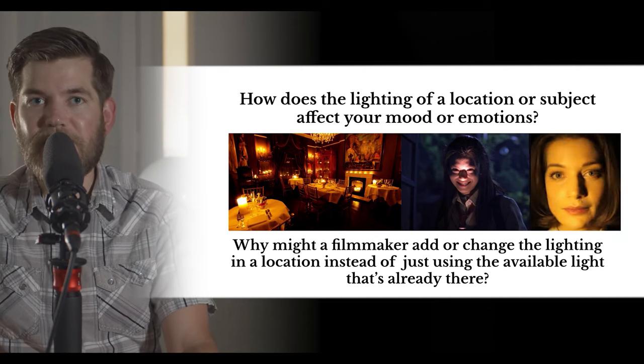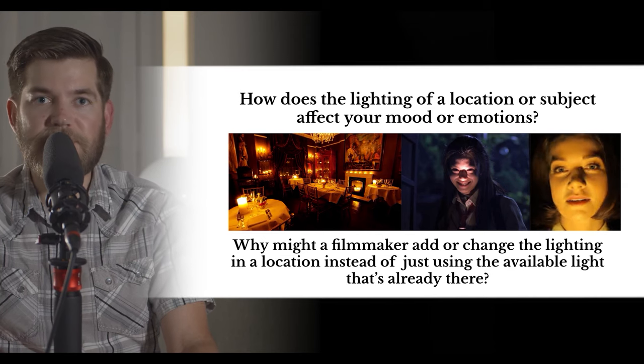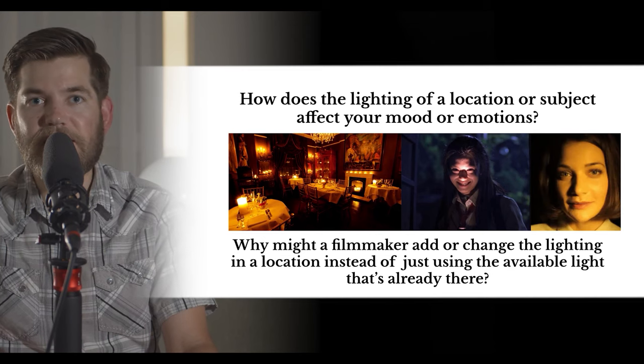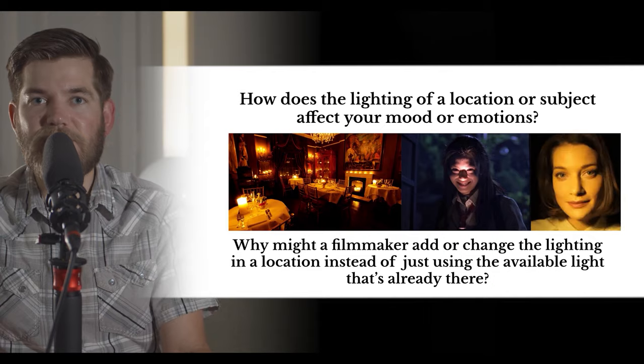Even sunlight can be manipulated — bounced off of surfaces, softened or shaded, molded with objects to cast certain shadows on the subject or reshape shadows on a subject's face. When outdoors, you're making decisions to shoot in the shade or in direct sunlight. Sometimes weather affects the lighting, and indoors you have much more control. Filmmakers are constantly making choices about lighting, specifically the cinematographers.